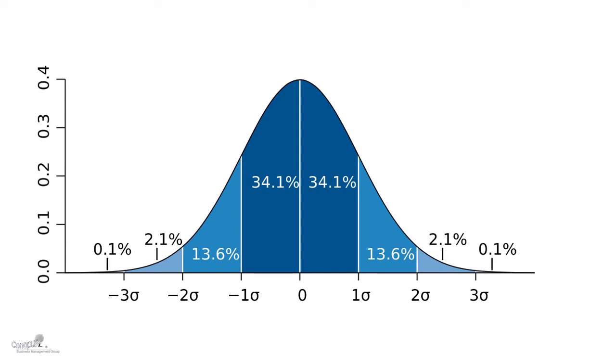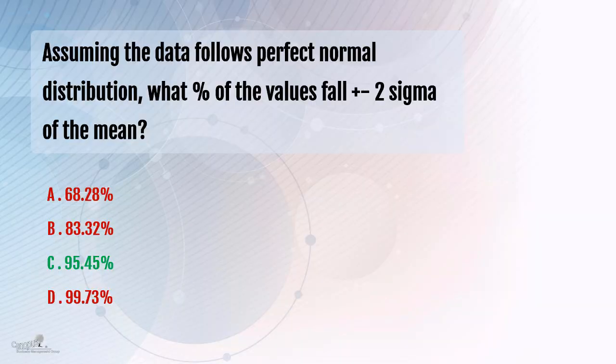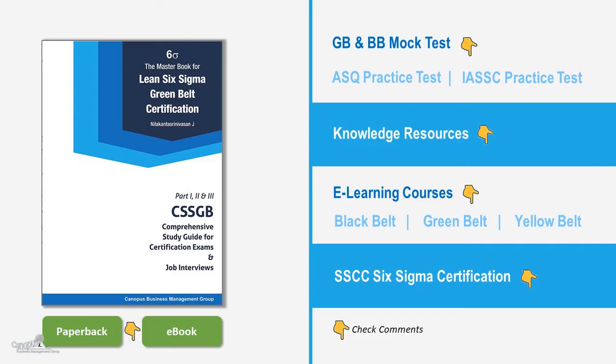Now for you to answer this question or any question relating to this, you need to know these three numbers by heart and that would be the easiest way to answer this question. So simply the answer is C, because two standard deviations on either side, as I mentioned earlier, covers 95.45% of the data.